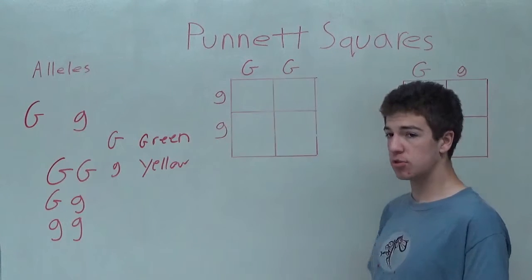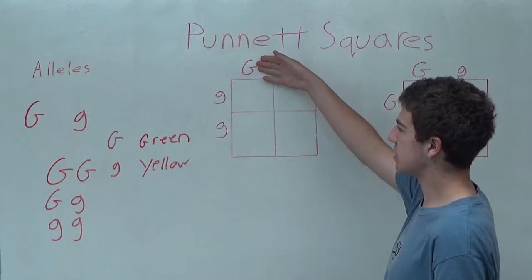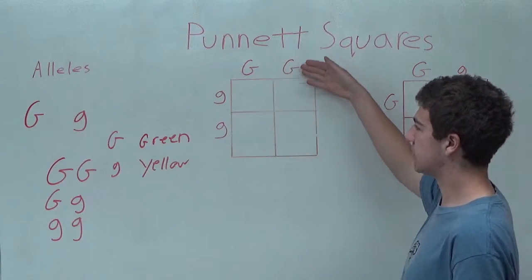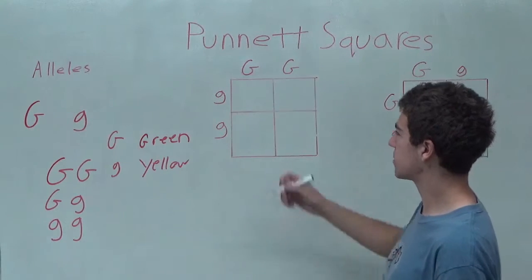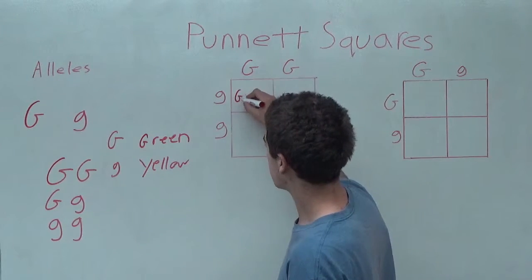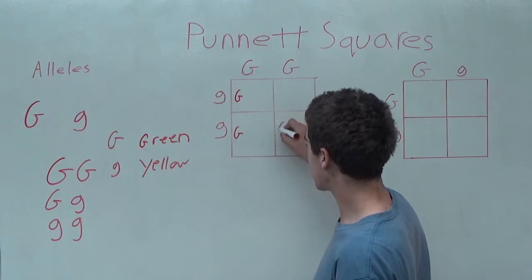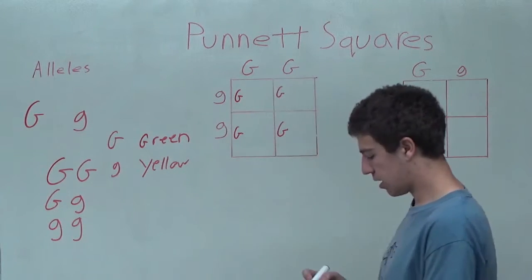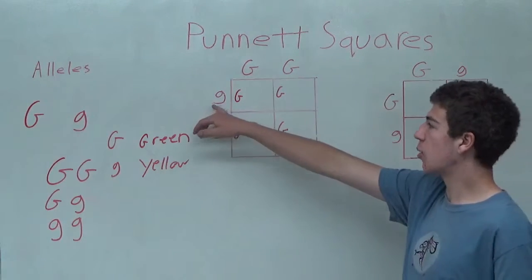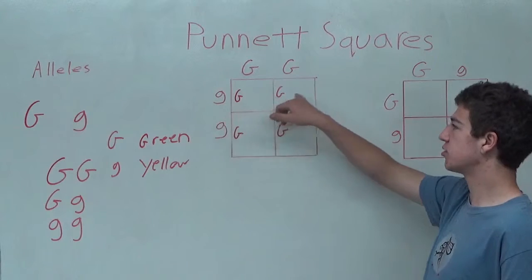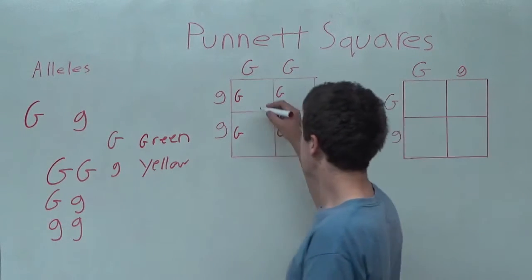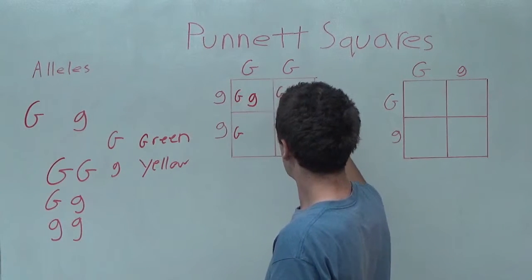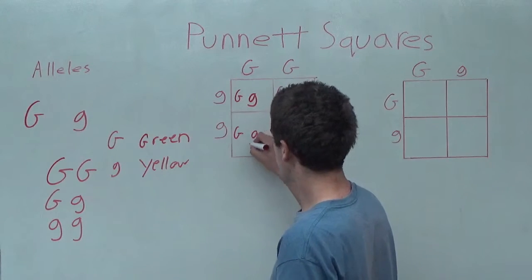The way we do that is we simply use the rows and columns. We carry down each letter down the rows and down the columns. So for this example, each uppercase G gets carried down into the square, and each lowercase g gets taken across the rows and combined. You simply move them over and write them in.